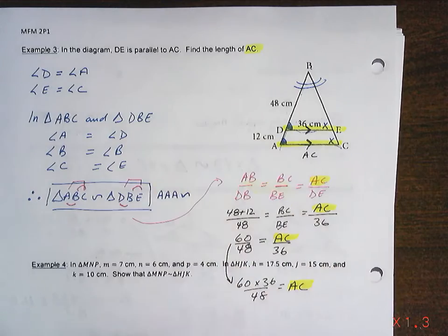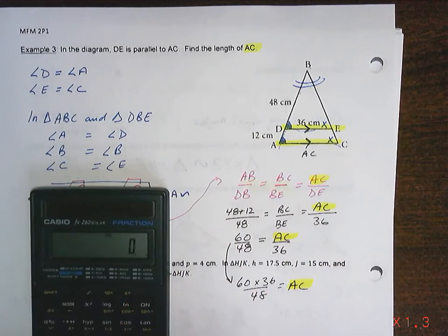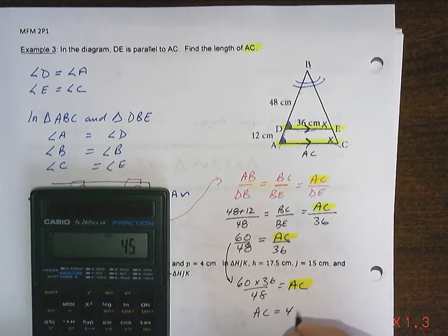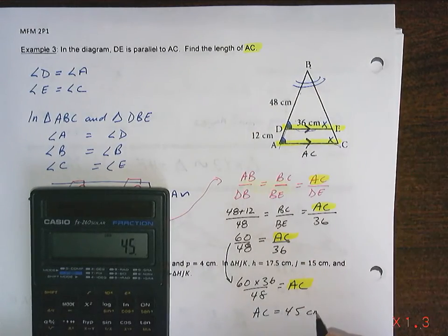I'm coming down into the bottom part of this solution. I'm running out of room, but that's okay, because I'm in my last step. 60 times 36 divided by 48 equals AC equals 45. And what's my units? Centimeters.